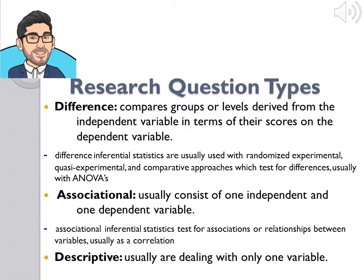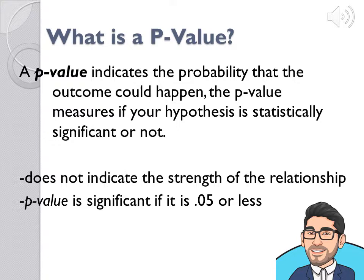Finally, with descriptive research questions, we are usually dealing with only one variable. Now, what is a p-value? A p-value indicates a probability that the outcomes could happen, usually about 5%. The p-value measures if your hypothesis is statistically significant or not, assuming a true null hypothesis.